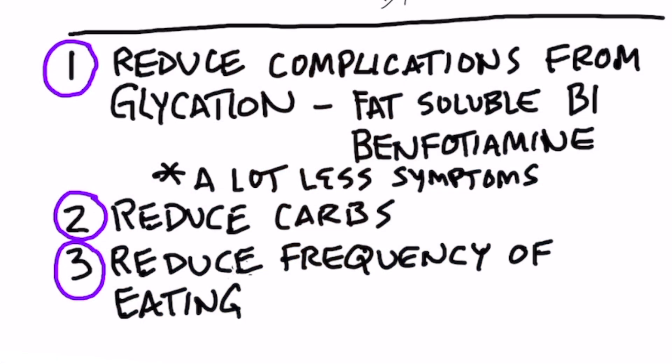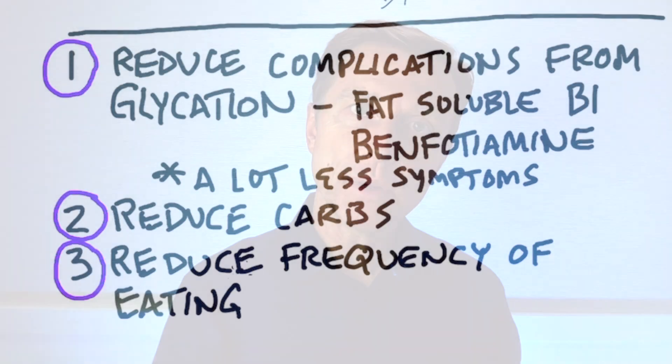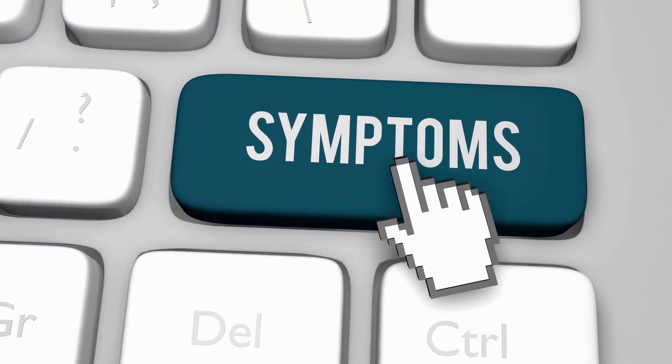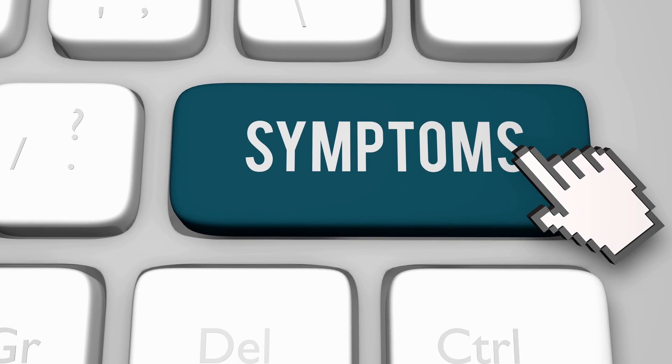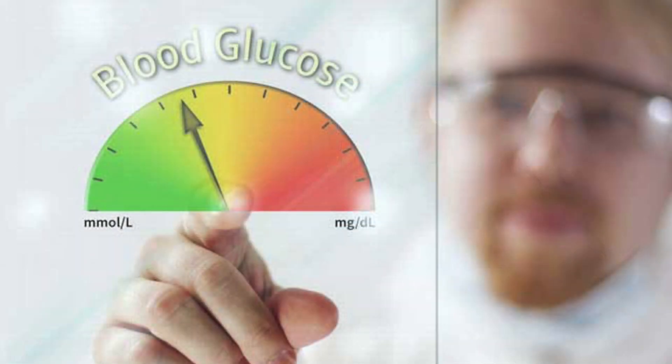There are a couple of things I want to mention as far as solving A1C. Yes, you need to cut your carbs down for sure. And yes, you need to reduce the frequency of eating — that's called intermittent fasting. Both of those actions are going to greatly improve your A1C very, very rapidly. But there's something else you can do for the complications of all these diseases — something you can do to reduce the symptoms of exposing glucose to these tissues.